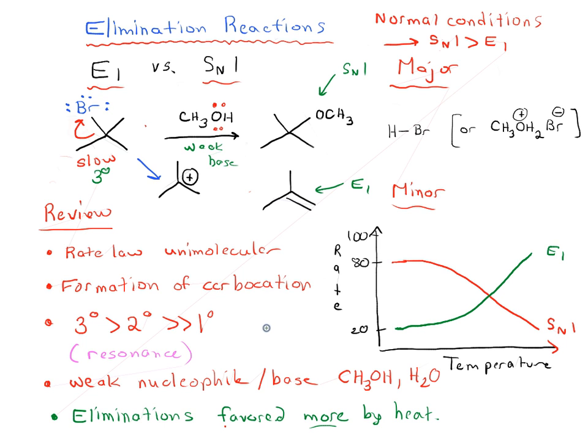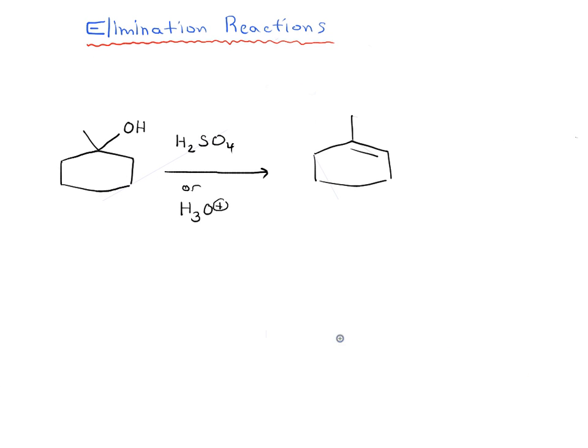So heat is something which we can use to favor elimination reactions more. So all things being equal, at low temperature substitution is going to be major, but as you increase the temperature you are going to get more elimination products. So that is one variable which you can change.